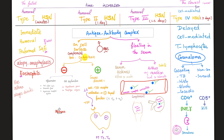Here is a quick overview of the four types of hypersensitivity. Type 1: immediate, within minutes, humoral immunity — which means antibodies — such as IgE. Immediate, humoral, preformed antibodies. Remember IgE is EW: allergy, anaphylaxis, atopy, asthma.